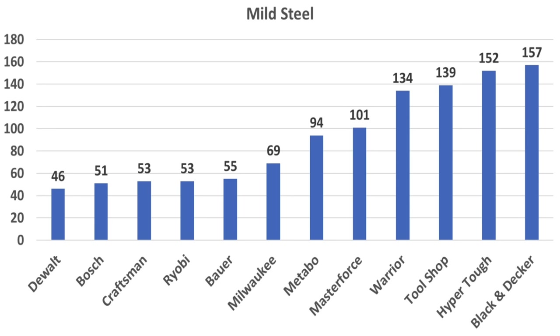If you're looking for a brand that cuts fast with the least amount of downward force or pressure on the twist drill, the third least expensive brand, the DeWalt brand did a terrific job coming in first and it made a very clean cut. Bosch, the most expensive brand, came in a very close second and delivered a slightly cleaner finish than DeWalt. Craftsman Ryobi, Bauer and Milwaukee also made quick work of the mild steel as well.